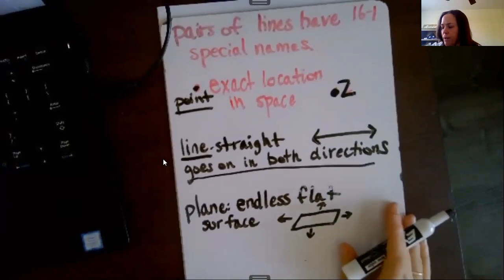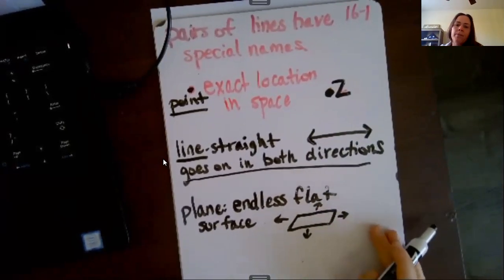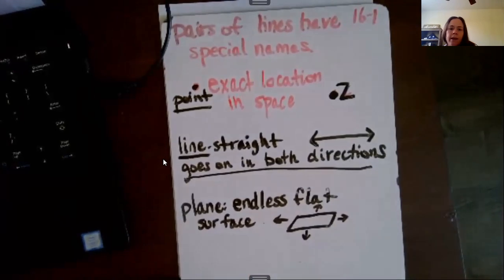This thing is called a plane—not an airplane, but it's an endless flat surface. This is just what they're referring to, and I just put little arrows here to show that it's endless, it goes on in both directions.